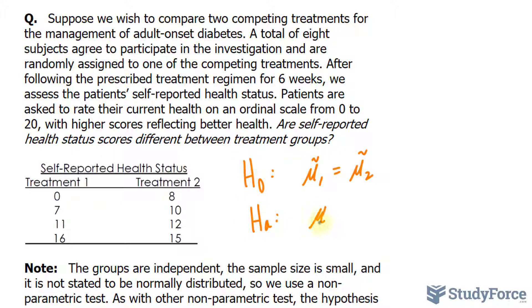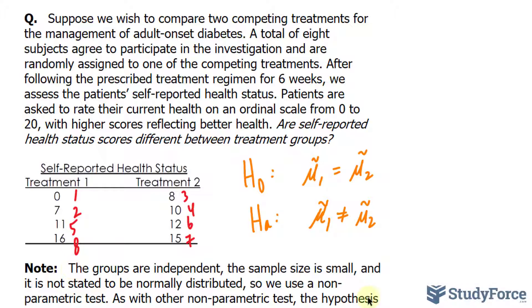The way it works is you first pool together all of these numbers and rank them from highest to lowest. You'll notice that zero is the smallest number out of all of them, so that ranks one. The second largest is seven, so that's two. We have three, four, five, six here. Seventh place is 15, and then last place is 16.